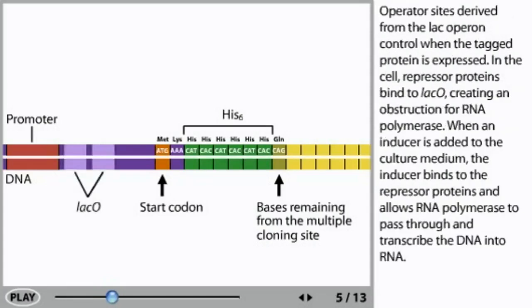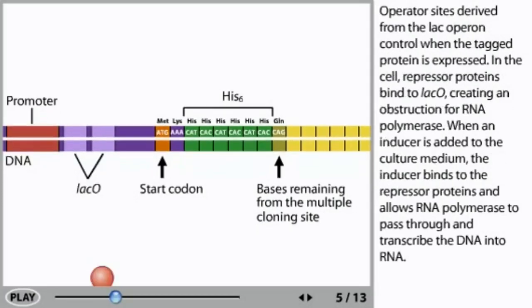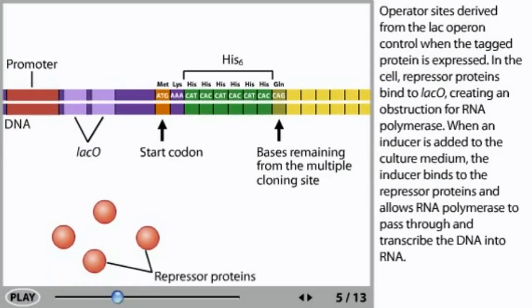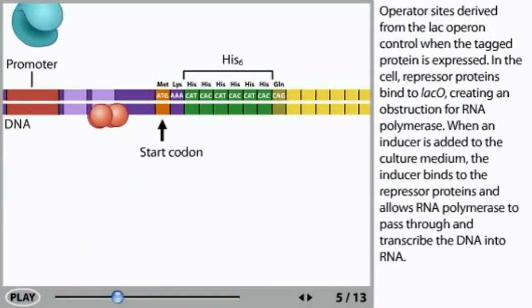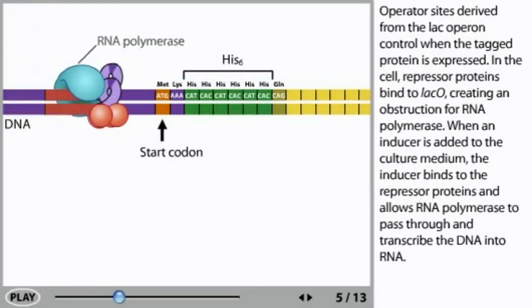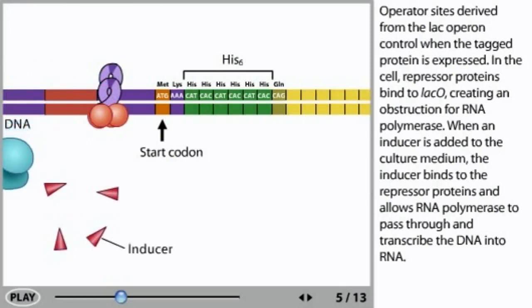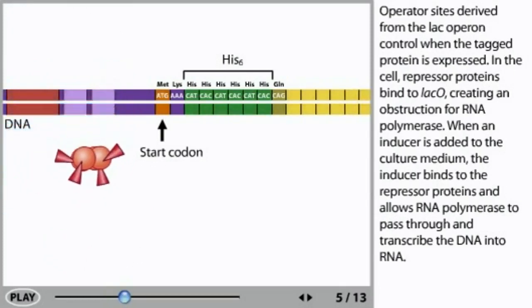Operator sites derived from the lac operon control when the tagged protein is expressed. In the cell, repressor proteins bind to lac O, creating an obstruction for RNA polymerase. When an inducer is added to the culture medium, the inducer binds to the repressor proteins and allows RNA polymerase to pass through and transcribe the DNA into RNA.